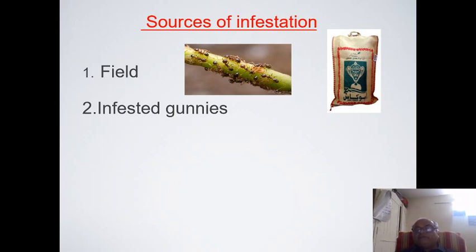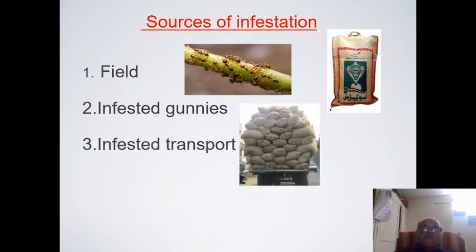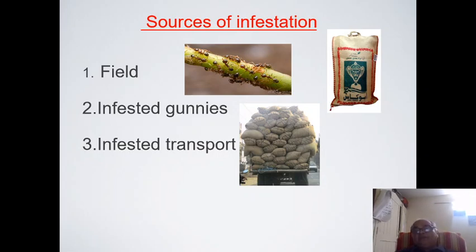Third source is during transport. If your field conditions are good and you are using fresh gunny bags, but the truck or trolley used for transporting your material has previously been used for transporting infested grain, there are plenty of chances that insects may remain in the body of the truck or trolley, and when you put your fresh gunny bags there they will become infested.